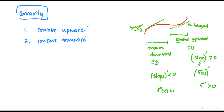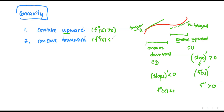That's the summary of concavity. Concave upward: check the second derivative — if it is greater than zero, the graph is concave upward. For the second derivative less than zero, the graph is concave downward.